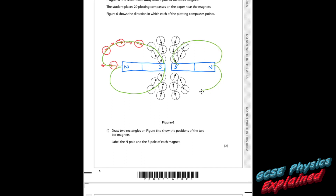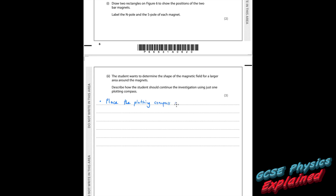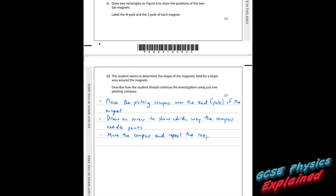Continue moving the compass step by step, drawing arrows each time. Once you have all your little arrows plotted, draw a line connecting all of those arrows together to show the overall shape of the magnetic field. The field lines come out of the north pole and loop around to the south. To summarise for three marks: place compass near the magnet; draw an arrow showing compass direction; move compass and repeat; then connect the field lines to show the overall shape.